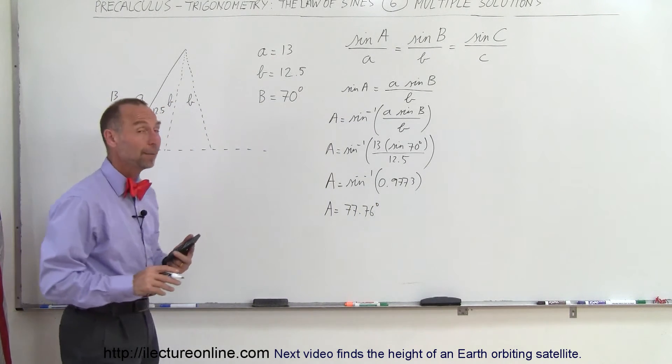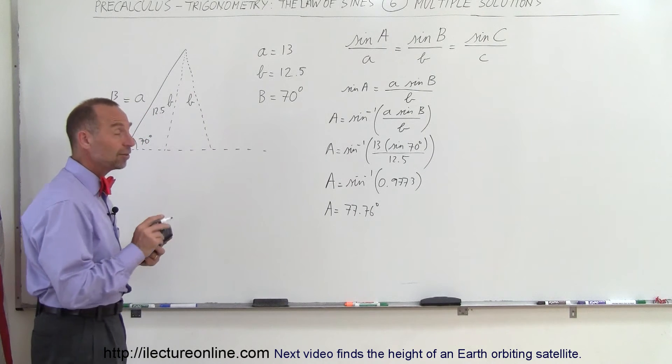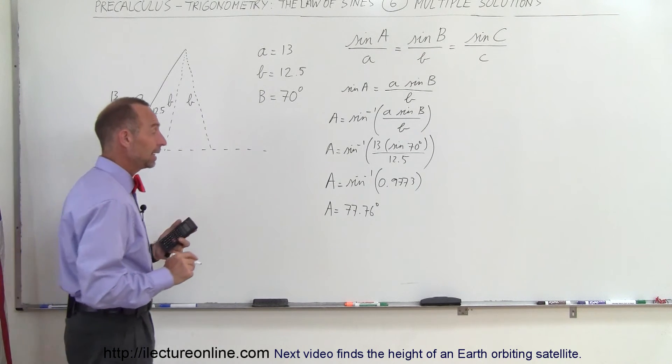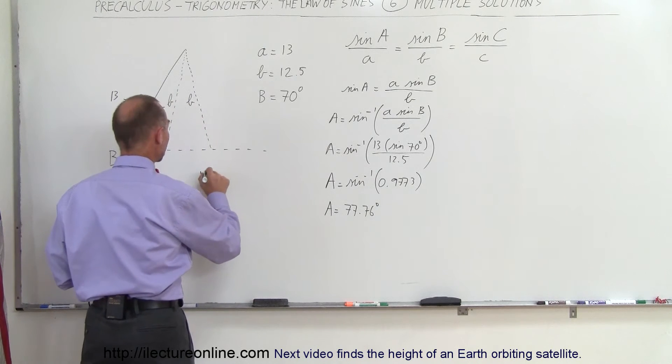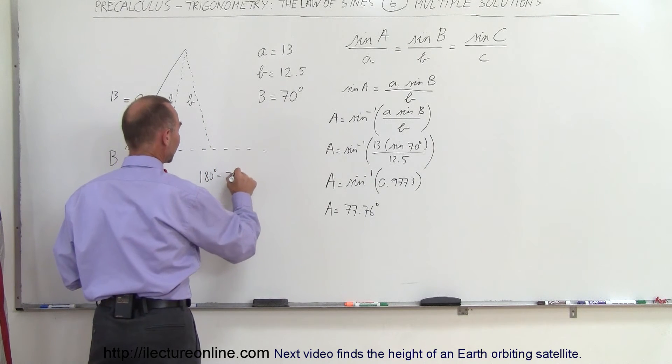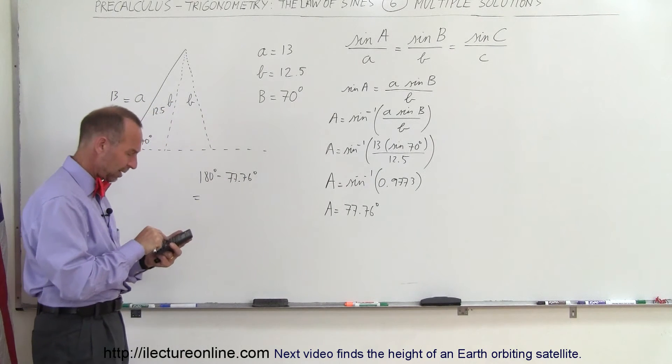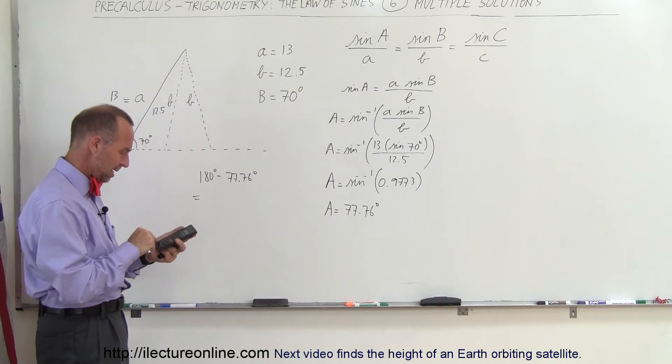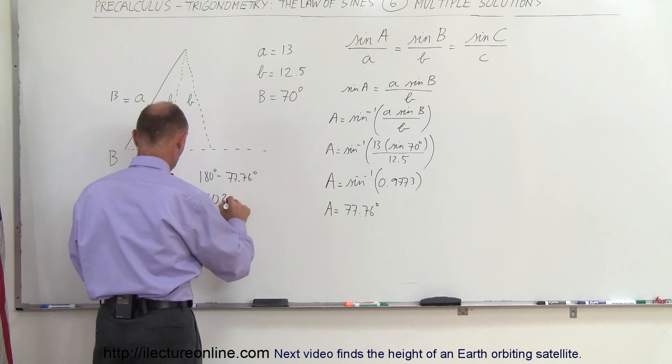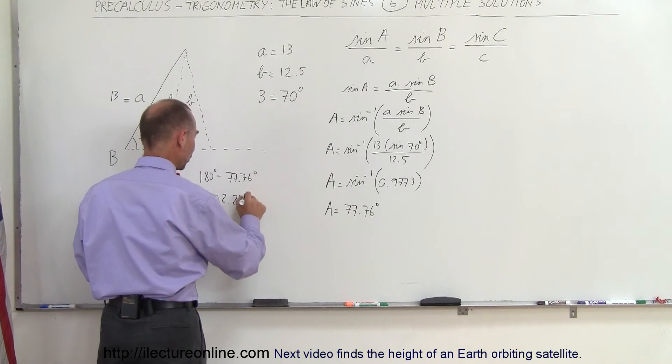Now, the thing is, you could also get a different angle. If I take 180 degrees minus 77.76 degrees, I get 102.24 degrees.